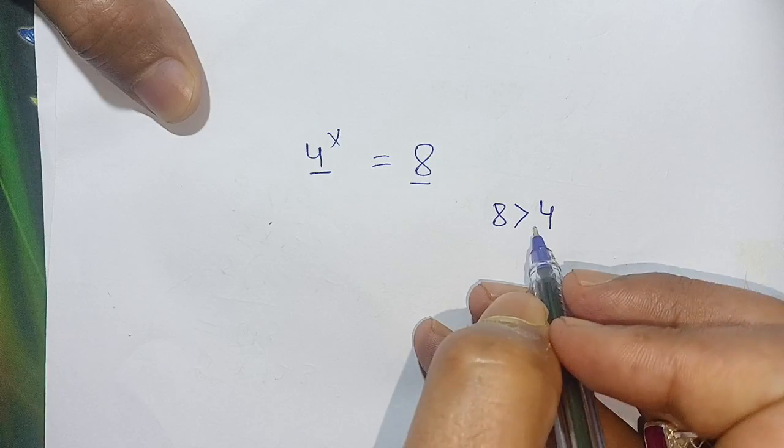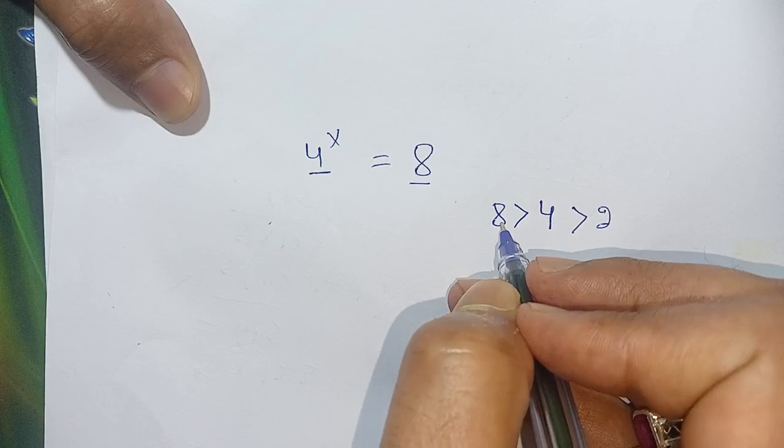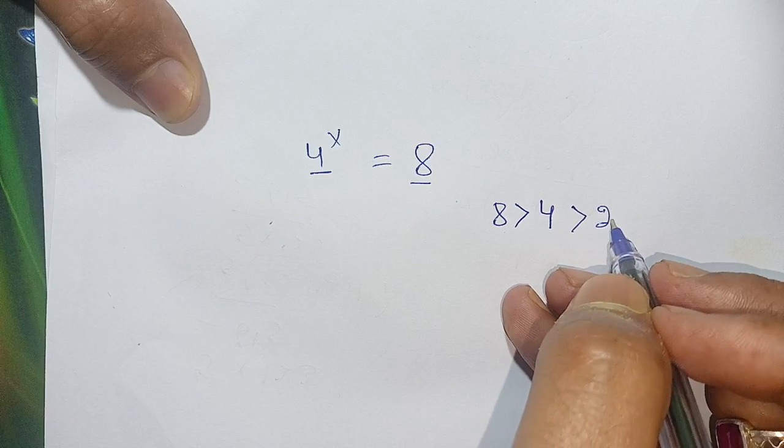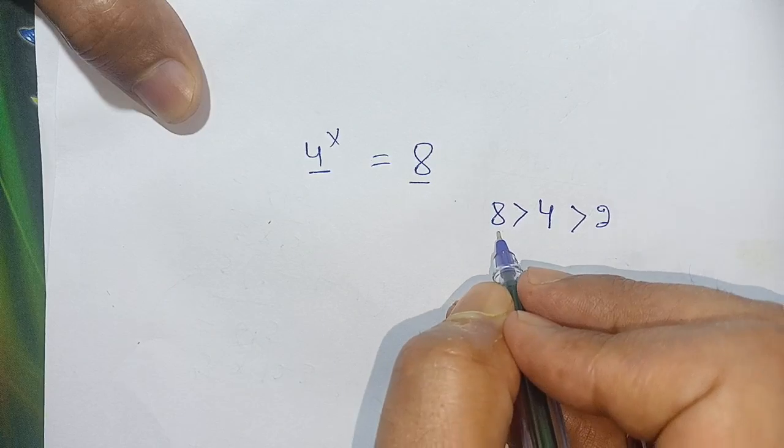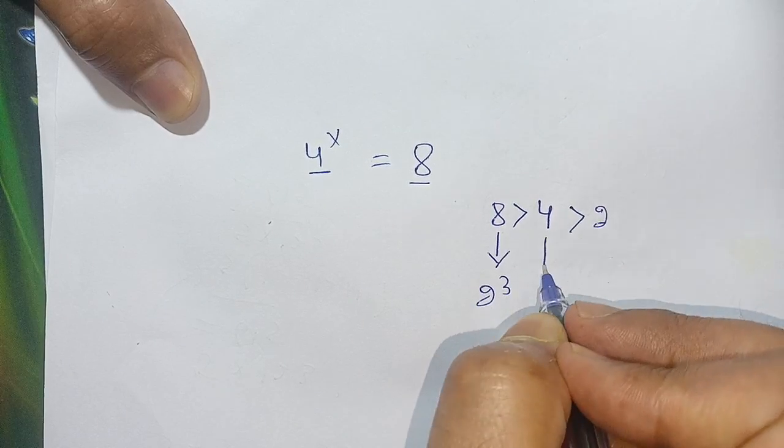Both terms 8 and 4 are greater than 2, and both can be written in terms of 2. Just like this: 8 can be written as 2^3 and 4 can be written as 2^2.